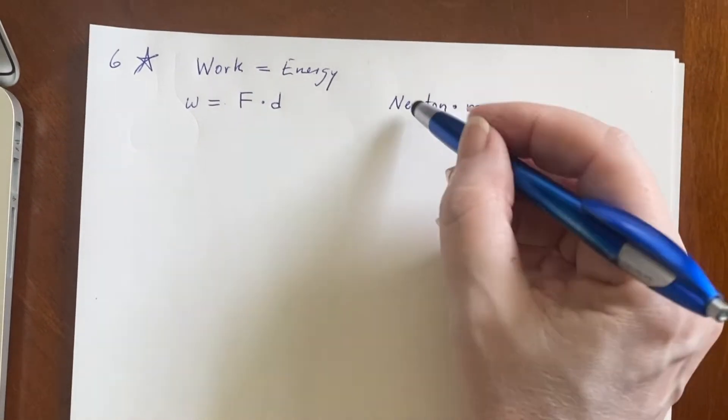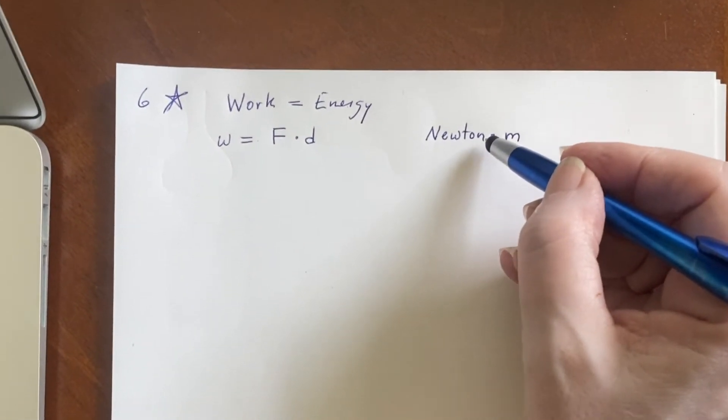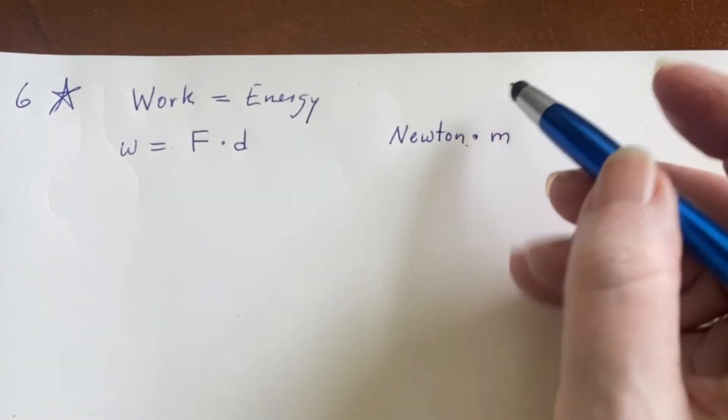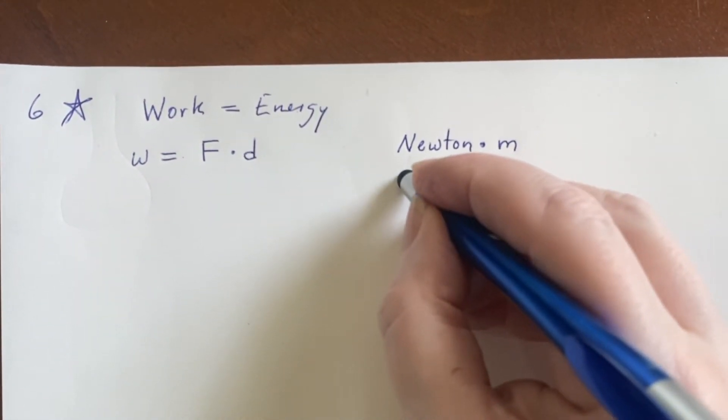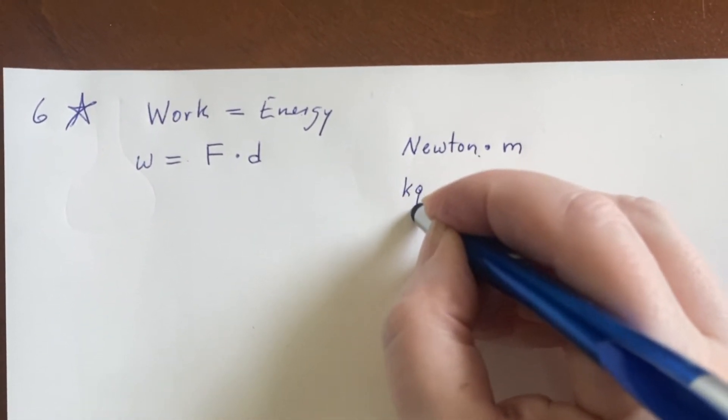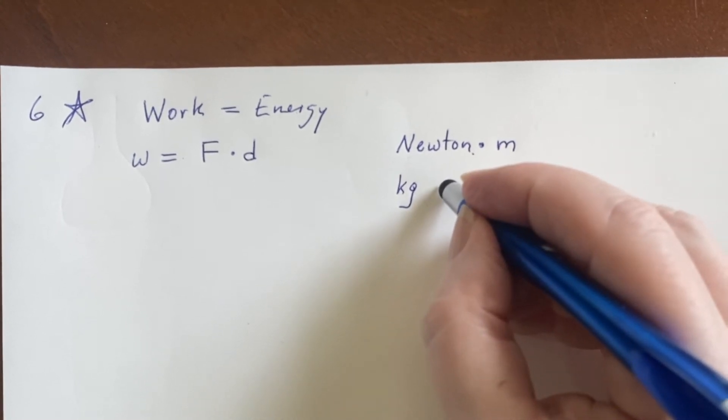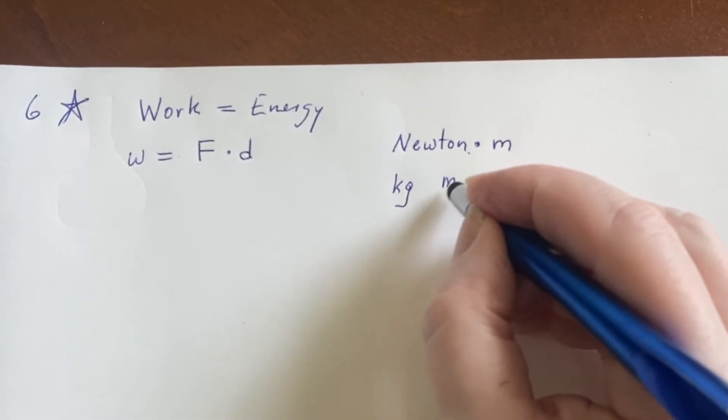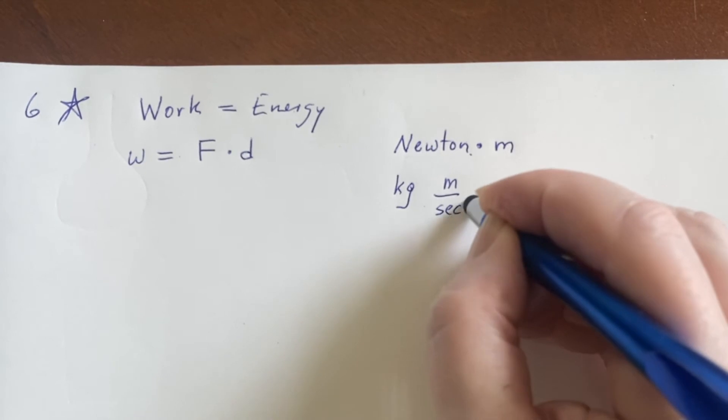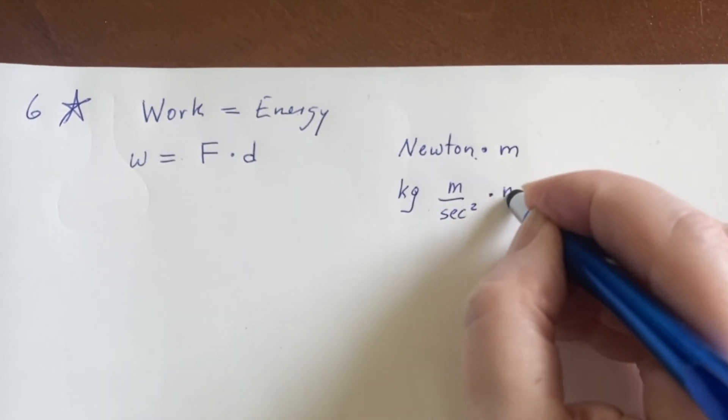Let's break down what force is. Force, F equals ma right? Oh m, that's a mass so that's kilogram. And then a was acceleration, that's meters per second squared. And then here's another meter because we're doing force over a distance. So you can see here are all the really basic units that go into it.